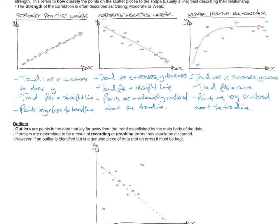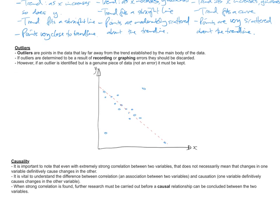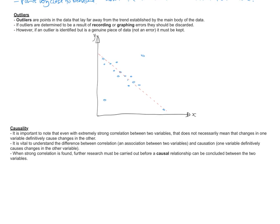So hopefully that enlightens you with how you would refer to the strength of correlations. Almost done. Outliers are another part of correlations we need to consider. Outliers are points in the data that lay far away from the trend established by the main body. It's not necessarily just points that lie far away from other points. It's points that lay far away from the trend that most of the points establish. So if we looked at this here, we have this trend line in red. It's a negative linear trend. This is the main body of the data here.